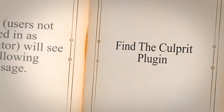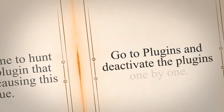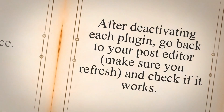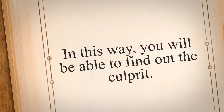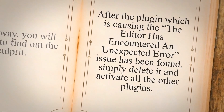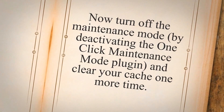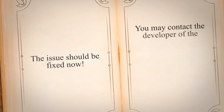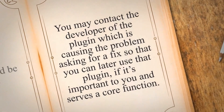Find the culprit plugin. Now it's time to hunt down the plugin that is actually causing this issue. Go to Plugins and deactivate the plugins one by one — not all at once. After deactivating each plugin, go back to your post editor, refresh, and check if it works. In this way, you will be able to find out the culprit. Once found, simply delete it and activate all the other plugins. Then turn off maintenance mode by deactivating the One-Click Maintenance Mode plugin, and clear your cache one more time. The issue should be fixed. You may contact the developer of the problematic plugin asking for a fix if it serves a core function for you.